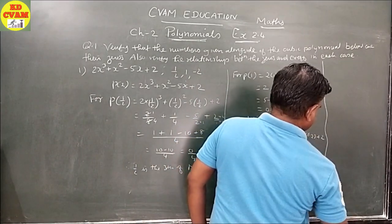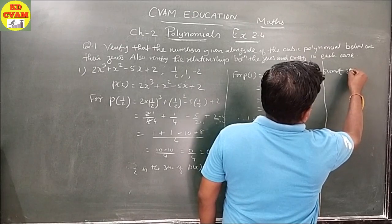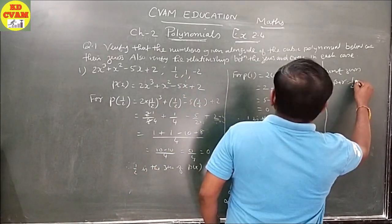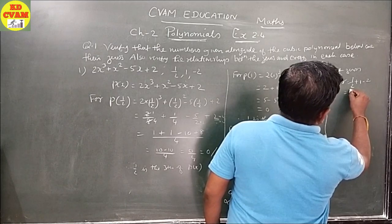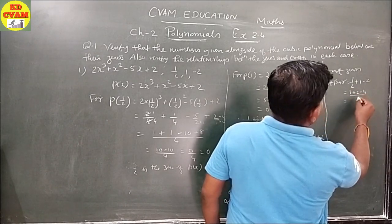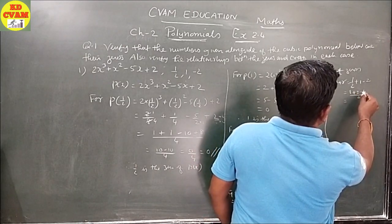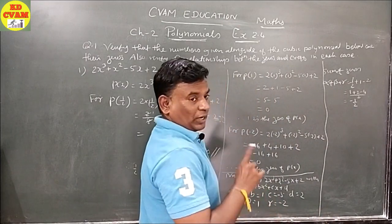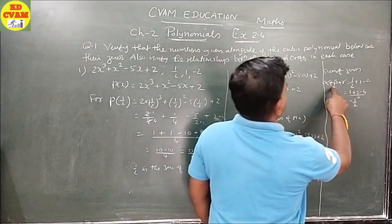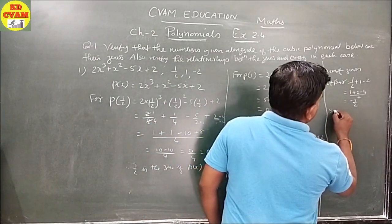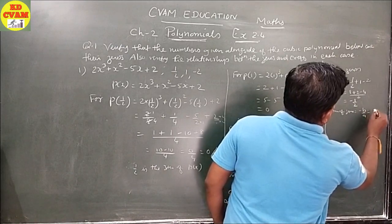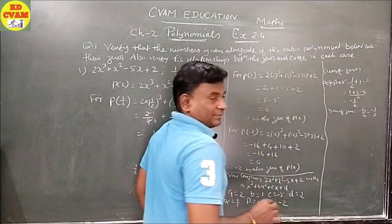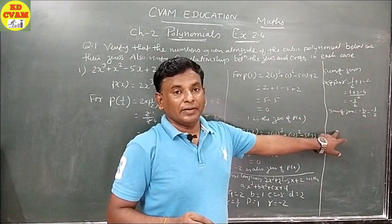Sum of zeros: alpha + beta + gamma = 1/2 + 1 - 2 = (1 + 2 - 4)/2 = -1/2. As per the formula, sum of zeros = -B/A = -1/2. Both values match, so the sum of zeros is verified.